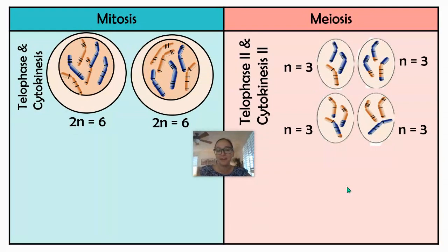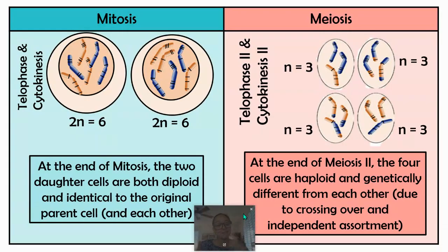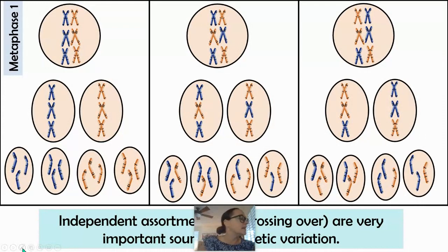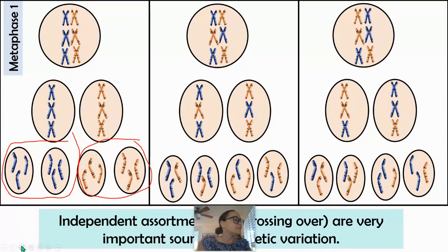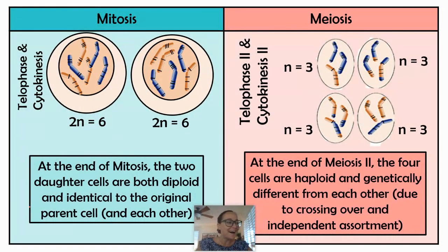At the end of mitosis, the two daughter cells are both diploid and identical to the parent cell and to each other. In meiosis, at the end of meiosis two, there are four cells that are all haploid and genetically different from each other due to crossing over and independent assortment — no two are alike. Without crossing over, two pairs of cells would be identical, but because of crossing over and recombinant chromosomes, all four end up genetically different. That's it for comparing and contrasting mitosis and meiosis — I hope it was helpful!